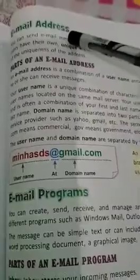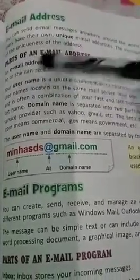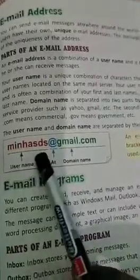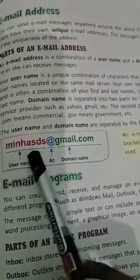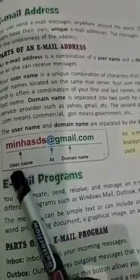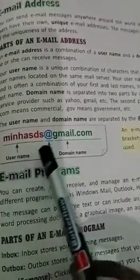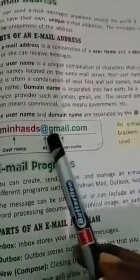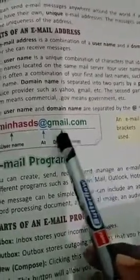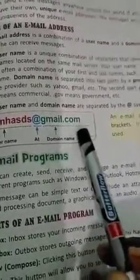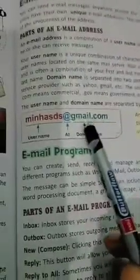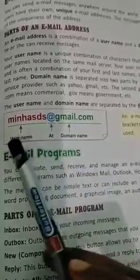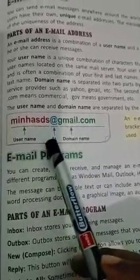First of all, we should know what is an email address. There are three parts of an email address. For example, 'minas' is the username of the email, then there is the 'at the rate' symbol (@), and then the domain name, which may be gmail.com, hotmail.com, or yahoo.com.